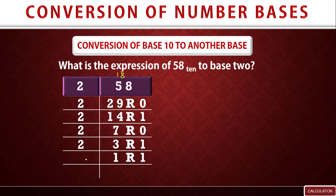We have 1 remaining, so we ask: can 2 go into 1? Since 2 cannot go into 1, we write 0 as the quotient, and what is left is the remainder, which is 1.